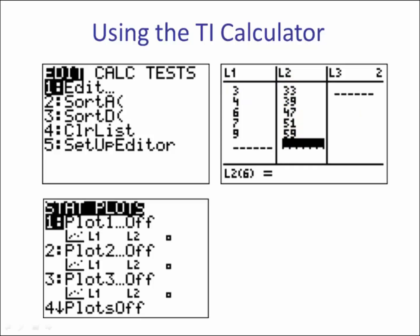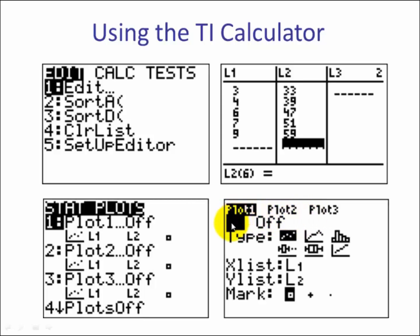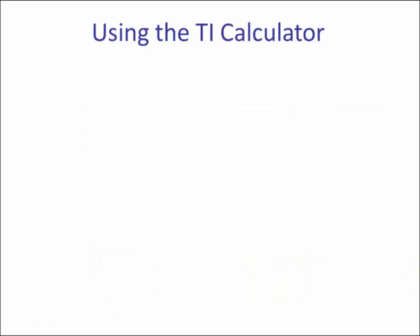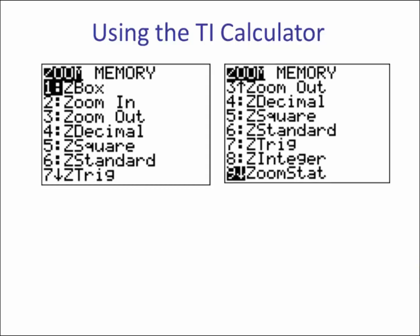Next you hit second and y equals, which is stat plot. Hit enter. If it's off, make sure you turn it on, and make sure it's in the scatter plot. You want to make sure that your x list is your independent variable, list one. Your y is list two. Now you hit zoom, and then if you remember, number nine is zoom stat. So scroll down to nine or just hit the number nine. Now you have your scattergram.